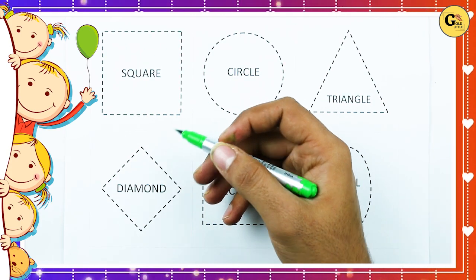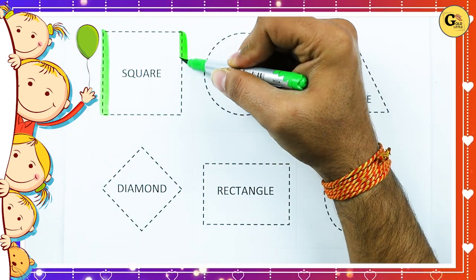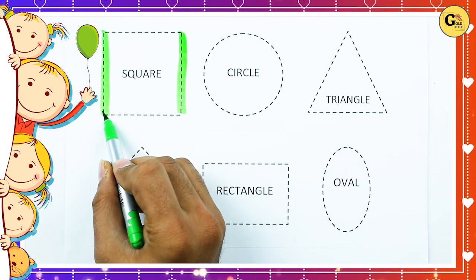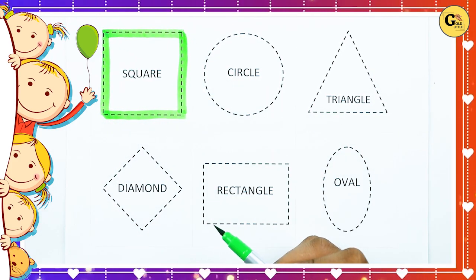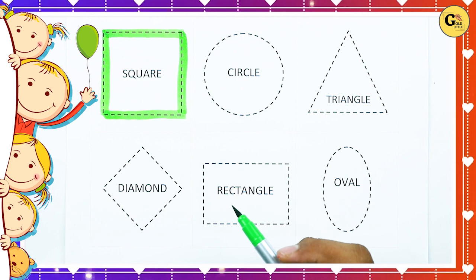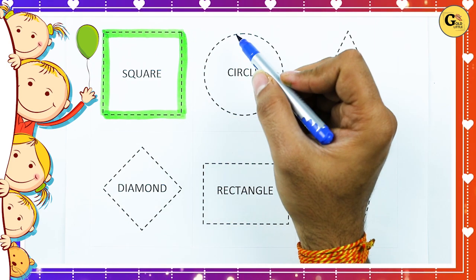It's square. One line, two line, three line, four line, two slipping line, two standing line. It's called square with green color.